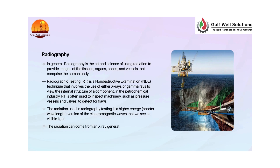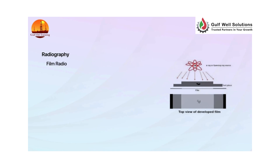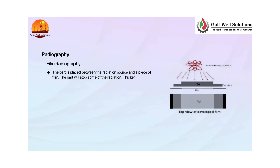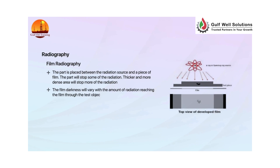The radiation can come from an x-ray generator or a radioactive source. In film radiography, the part is placed between the radiation source and a piece of film. The part will stop some of the radiation — thicker and more dense areas will stop more. The film darkness will vary with the amount of radiation reaching the film through the test object.